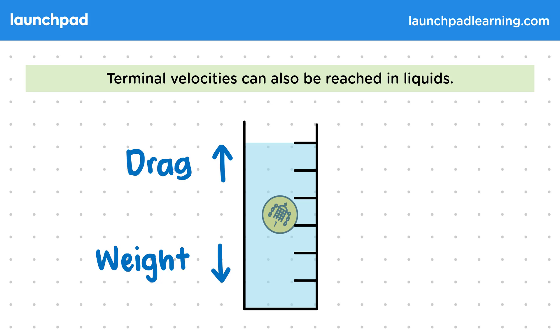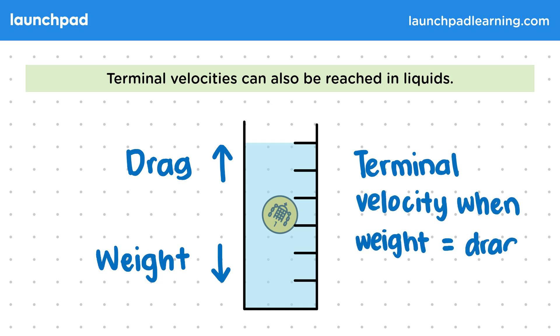Drag works largely the same way as air resistance. It's caused by collisions with liquid molecules instead of air molecules. Most importantly, drag forces also depend on how fast an object is moving. So we'll still see the coin speed up and the drag force increase. And then we'll reach a terminal velocity when the weight equals the drag.